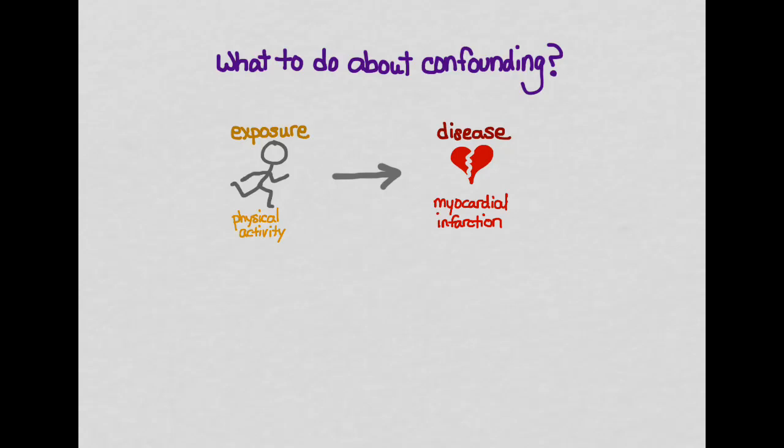Now we know confounding variables are a problem. The question is what to do about it. The first thing you want to do is to be aware of all the potential confounders — you want to identify all the risk factors for a disease that are also associated with the exposure.